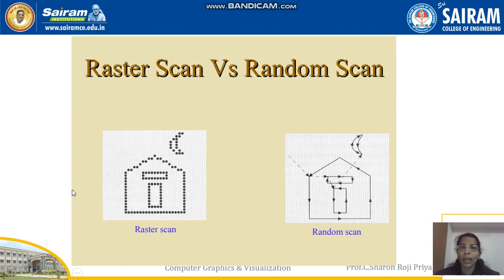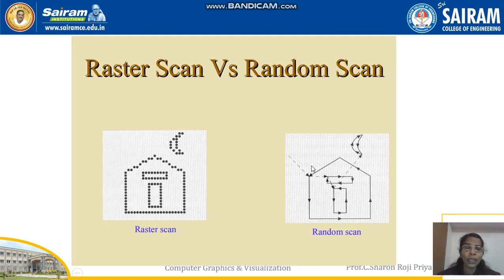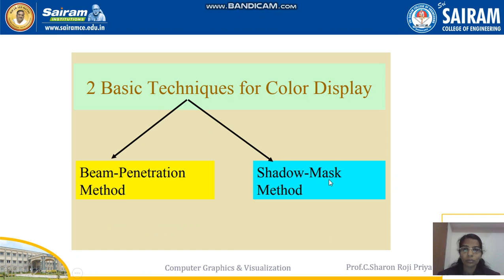In summary: raster scan uses a collection of pixels, while random scan display draws all images with the help of lines — it is a line drawing system.